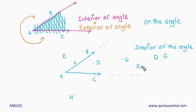And which are in the exterior of the angle? Obviously point H and point E. They are on the exterior of the angle. And which are on the angle? The points which are on the angle.